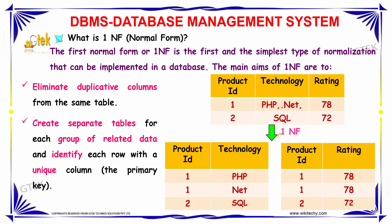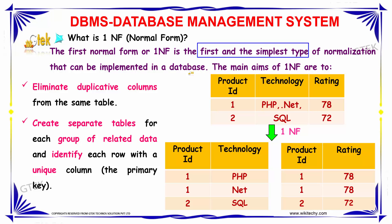What is first normal form? First normal form is the first and simplest type of normalization. Normalization is nothing but making the data sound perfect and without repetition. The first normal form is the first and simplest type that can be implemented on a database which has data.